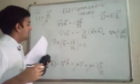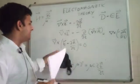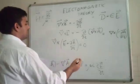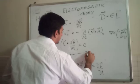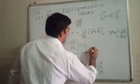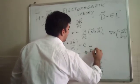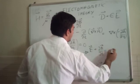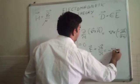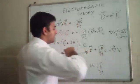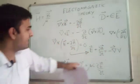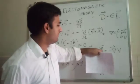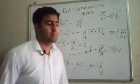A vector field whose curl is zero can be described as the gradient of a scalar field. Therefore, E plus dA/dt equals minus gradient of V, which gives us the electric field E in terms of the magnetic vector potential A and the scalar potential V: E equals minus gradient of V minus dA/dt.